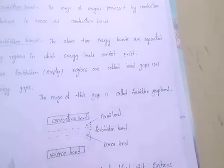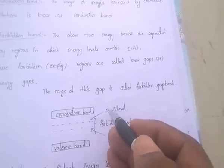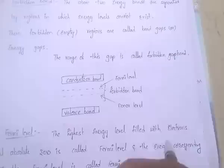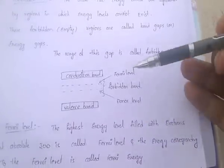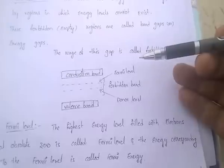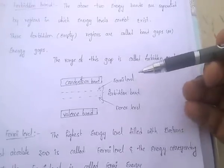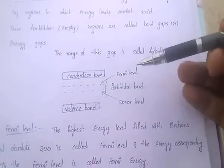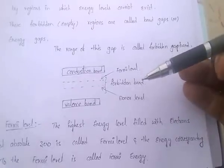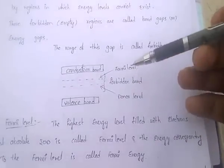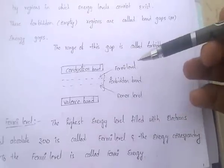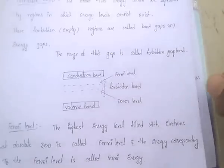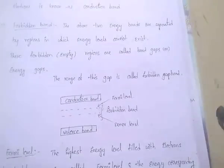Next, Fermi level. Fermi level is the highest energy level filled with electrons at absolute zero. It is called Fermi level. The energy corresponding to this Fermi level is called Fermi energy.